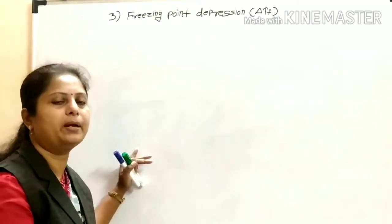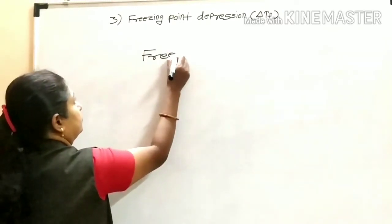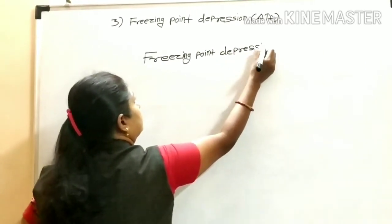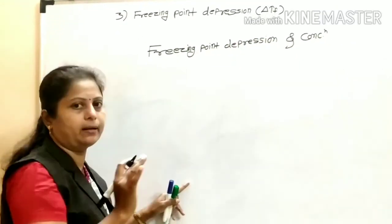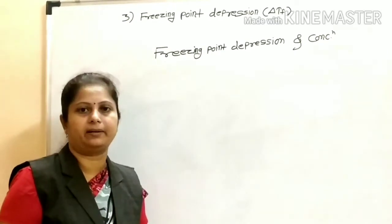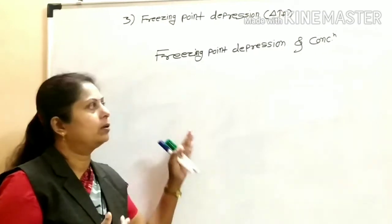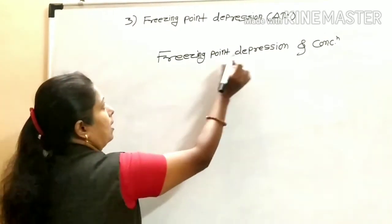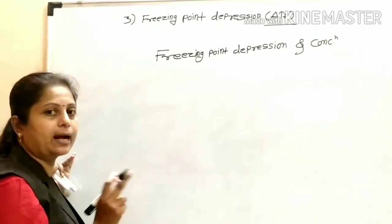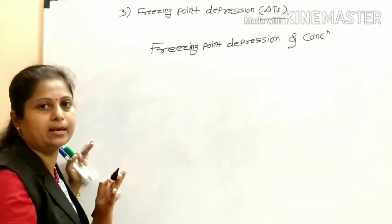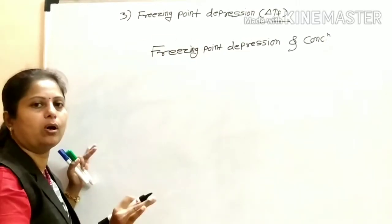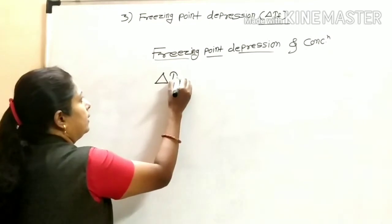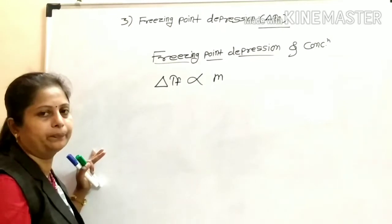Now, the relation between concentration and freezing point depression: the concentration term used here is molality, represented by small m. This is similar to what was used in elevation of boiling point, where delta Tb was used — here we use delta Tf.